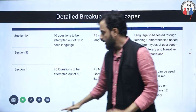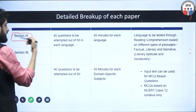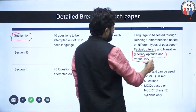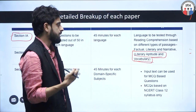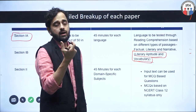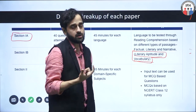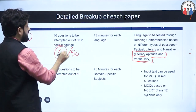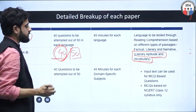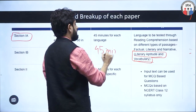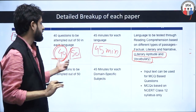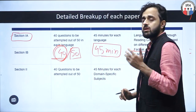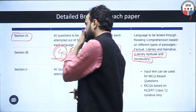For Section 1A — whether you choose English, Hindi, Marathi, or any other language — you will have MCQs testing your basic literary aptitude and vocabulary, including passages, antonyms, synonyms, and grammatical questions. You will get 50 questions and have to attempt 40 out of 50, with 45 minutes to complete the paper. The questions will be straightforward and not too difficult.